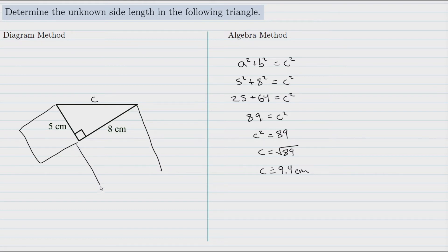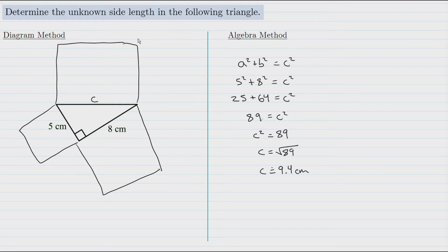We want to find the area of these squares. Looking at this square here, each side is 5 centimeters long, so the area would be 5 times 5, which is 25 centimeters squared.